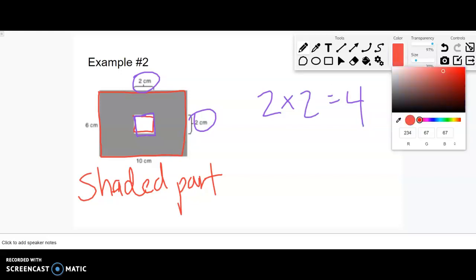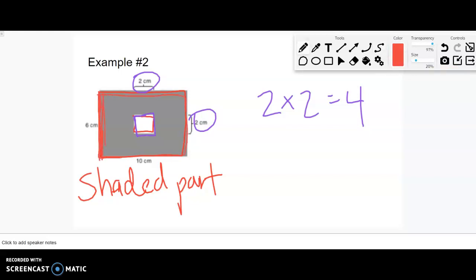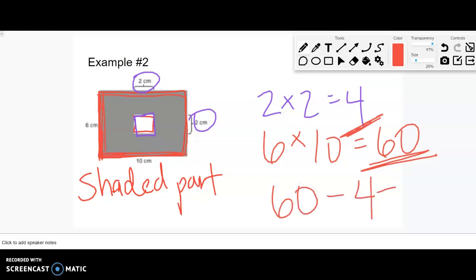What's the area of that big part assuming it wasn't cut out? I know it's 6 this way and 10 this way, so 6 times 10 is 60. But I'm taking that 60 and cutting out that 4. If I'm cutting something out, I need to subtract. I'm taking 60 and subtracting that 4 from the middle, which gives me 56 square centimeters. Sometimes we have a total and we're taking out a part instead of combining rectangles together.